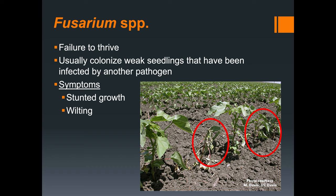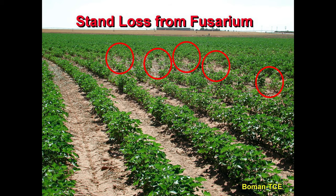Fusarium really likes to move into the seedling when initial infection by other pathogens has already taken place, so it is hard to diagnose symptoms based off a Fusarium infection alone. However, it is common to see stunting of the seedlings early on in the growing season and wilting as the growing season continues.